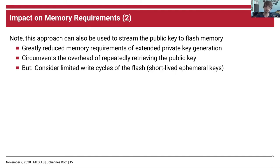Our approach can also be used to stream the public key to flash memory. The drawback is the high computational effort — about 4 seconds for the smallest parameter set. However, if we stream the public key once to flash, we do not need to recompute it every time. We also still benefit from the lower RAM requirement during key pair generation. One consideration is limited write cycles for flash memory: using very short-lived ephemeral keys could wear out flash quickly.